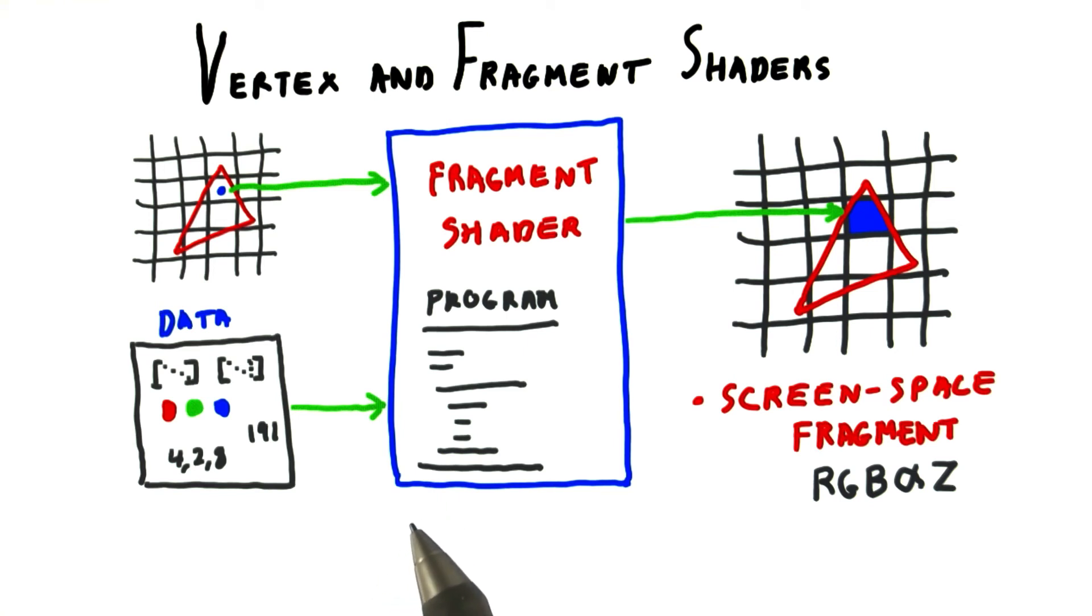modern GPUs use what is called a unified shader in the hardware itself. These shader processors are assigned on the fly by the GPU to execute vertex shader or fragment shader programs, depending on where the bottleneck is found.